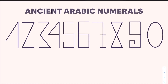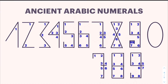What I mean by that is that each of the numbers is designed so that it has the same number of angled corners in its shape as the number it represents. For example, number one has one angled corner, number two has two angled corners, and so on all the way to number nine. And zero was designed in an oval shape so that it wouldn't have any angled corners. I was very fascinated by this idea and I began looking into it a bit more.